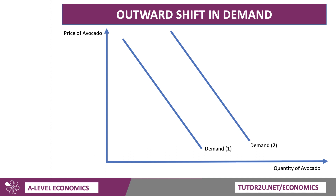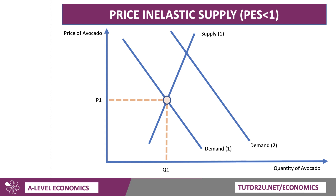Crucially, the elasticity of supply determines the ability of avocado growers and producers to meet that increase in demand. This supply curve has a low price elasticity of supply — we call that price inelastic supply, where the coefficient of elasticity is less than one. For example, a 25% increase in price might only lead to a 10% increase in supply. The original equilibrium is price P1 at output Q1. When supply is inelastic, growers find it difficult, at least in the short term, to respond, and therefore the market price rises quickly from P1 to P2 and quantity rises to Q2.